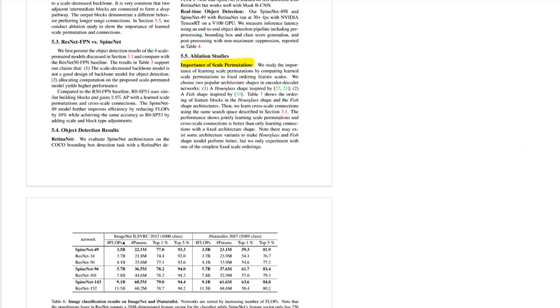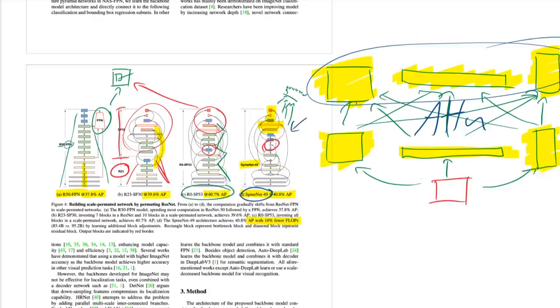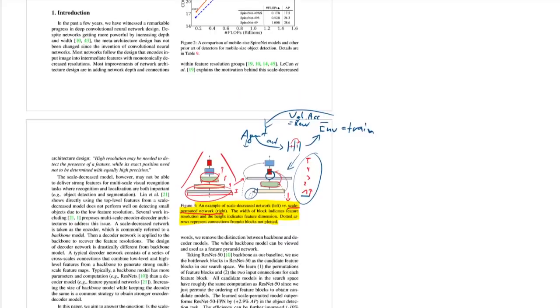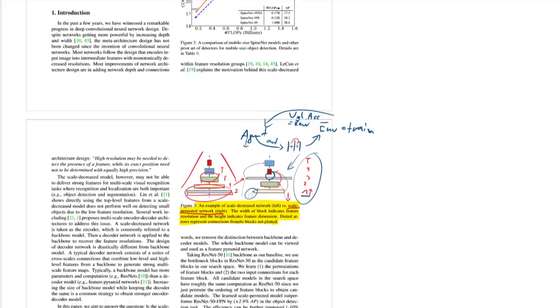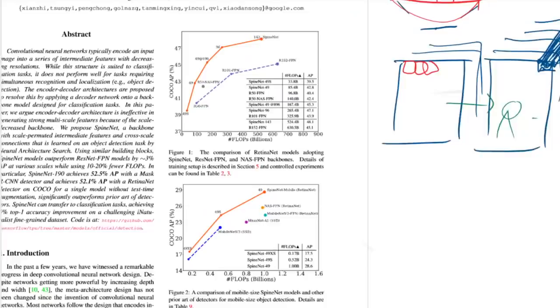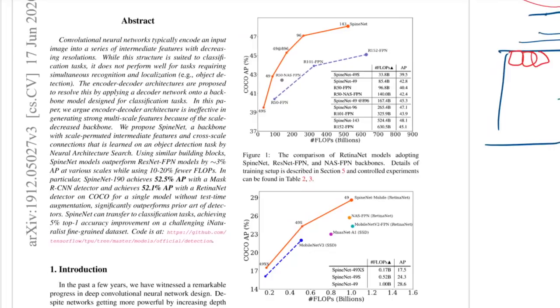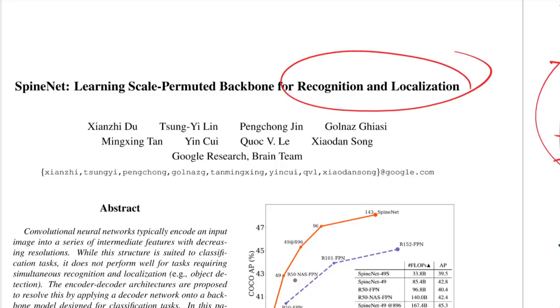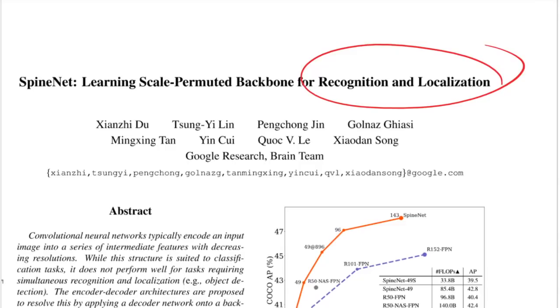Overall, this is a cool engineering and investigative project with well-done experiments, producing a better model than ResNet-50. If this backbone proves generally useful, the entire community benefits. Whether it generalizes broadly beyond the tasks considered remains to be seen. Leave a comment if you want changes or have suggestions, leave a like if you liked the video, share it out.